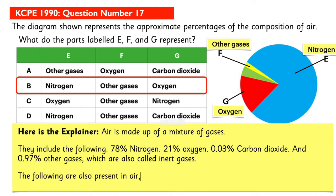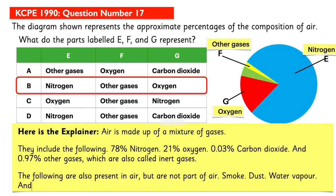The following are also present in air but are not part of air: smoke, dust, water vapor, and pollutant gases such as sulfur dioxide.